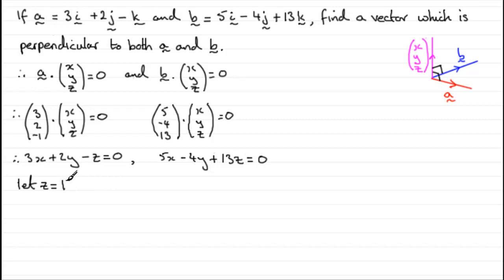OK, well, let z equal 1. So, if we substitute it into this equation, we therefore have 3x plus 2y minus 1 equals 0. And if we substitute it into this equation, we end up with 5x minus 4y plus 13 equals 0. Now, if I number these two equations, let's say we call them 1 and 2.